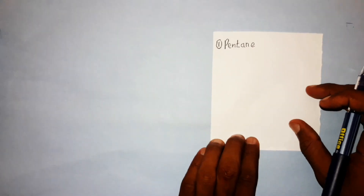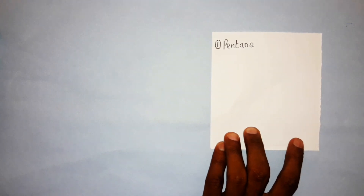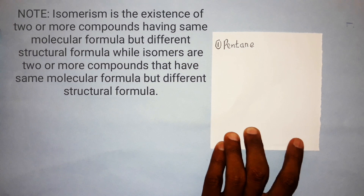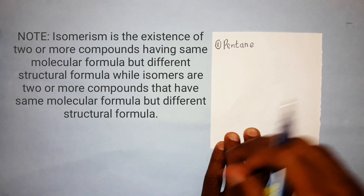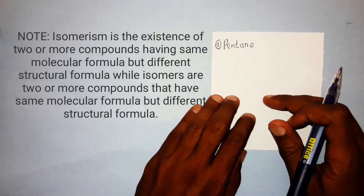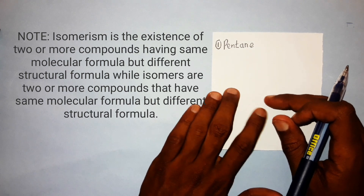The next concept is isomerism. Isomerism is the existence of compounds having the same molecular formula but different structural formulas. Isomers are compounds that have the same molecular formula but different structural formulas. In alkanes, they exhibit a type of isomerism called chain (branched) isomerism.